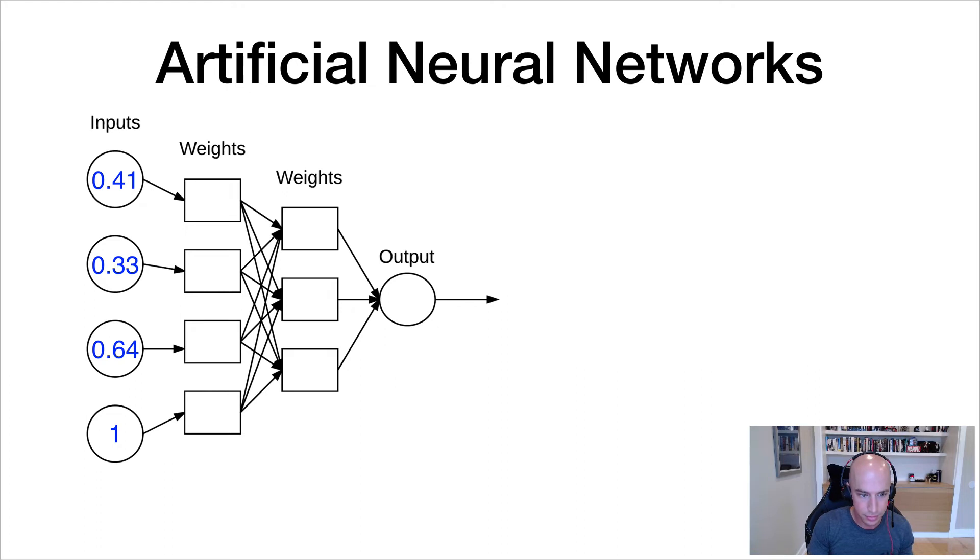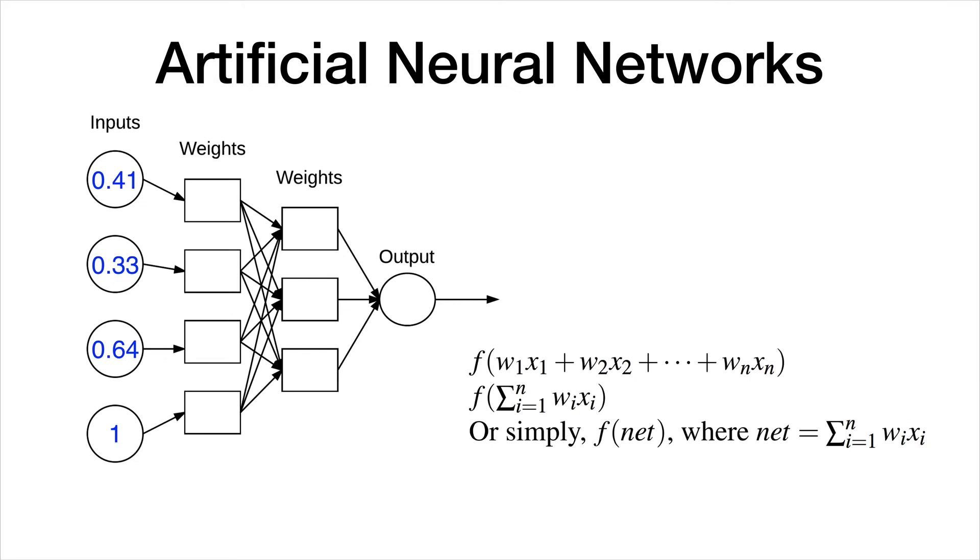Let's look at an example here. We have these inputs to the neural networks, just arbitrary values. We can express this mathematically. You could say f of weight one times x1 plus weight two times x2, all the way through all the inputs and weights in your network. You could concisely write that as a summation operation, or simply what we would call f of net, where net is just your input all the way through the output, and f of net is therefore your output through the neural network.